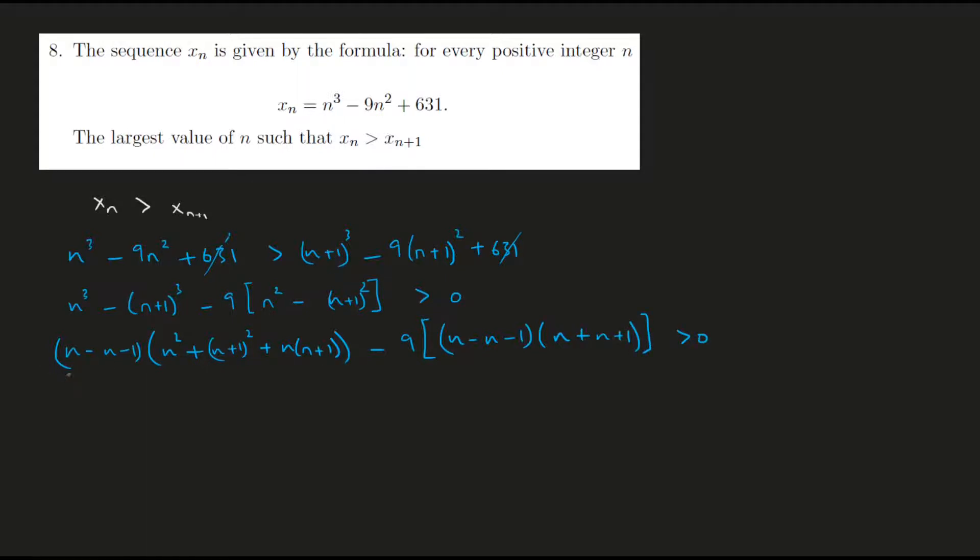Greater than 0. Here the n's cancel out, so we're left with minus n square plus n square plus n square plus 1 plus 2n plus n square plus n minus 9 times again the n's cancel out.